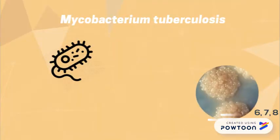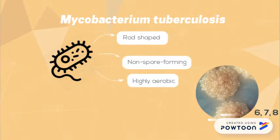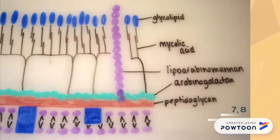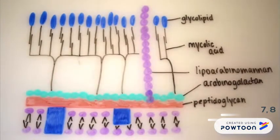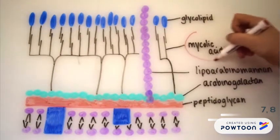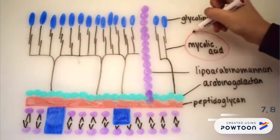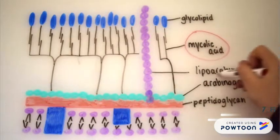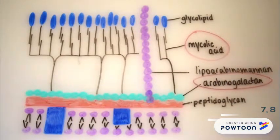Mycobacterium tuberculosis is a rod-shaped, non-spore-forming aerobic bacteria measuring 0.5 to 3 micrometres. The acid-fast bacilli possesses a unique cell wall structure involving a large amount of the fatty acid mycolic acid, which is covalently attached to the underlying peptidoglycan-bound polysaccharide arabinogalactan, providing a tarry lipid barrier which makes it impervious to Gram staining.